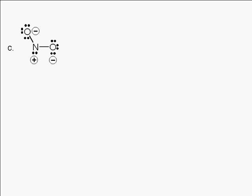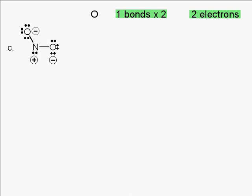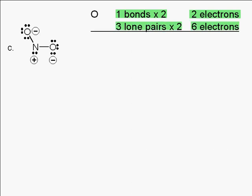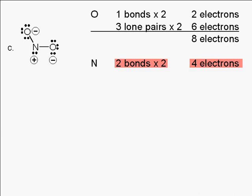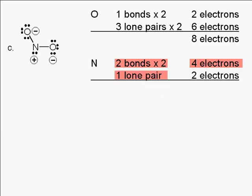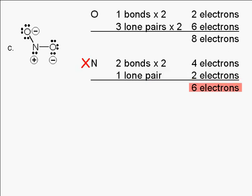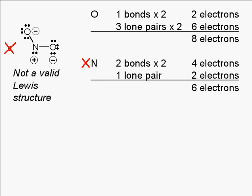What about structure C? As in B, we have oxygens with one bond and three lone pairs — these follow the octet rule. The nitrogen in this structure has two bonds giving four electrons and one lone pair giving two electrons for a total of six. The nitrogen violates the octet rule, so C is not a valid Lewis structure.